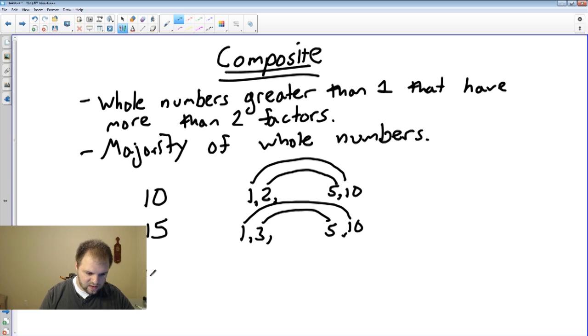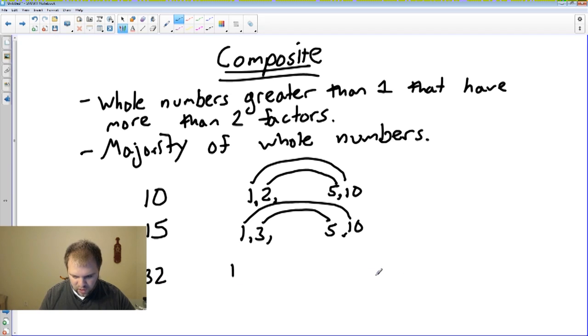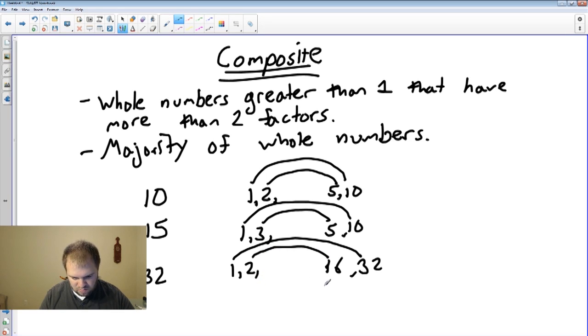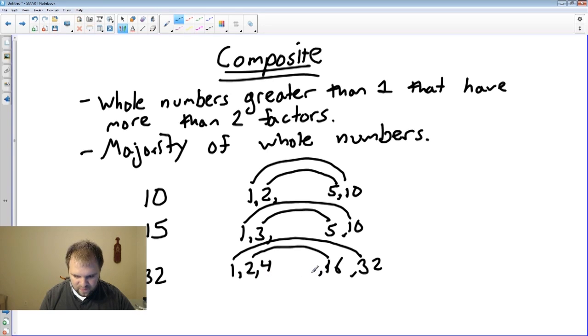And for the last example, we are going to look at 32, which has 1 and 32, 2 and 16. And then we also have to look at, does it have 3? No, it does not. Does it have 4? Yes, it does. 4 and 8.